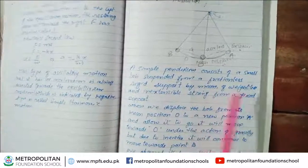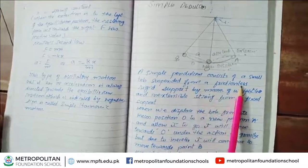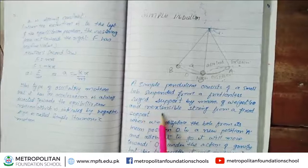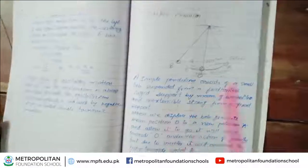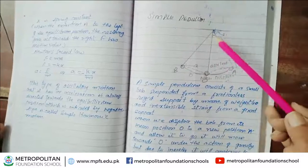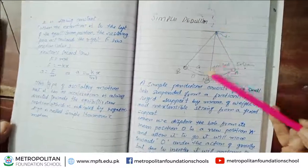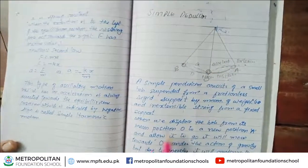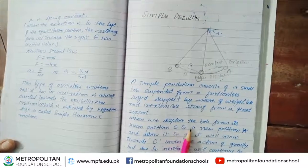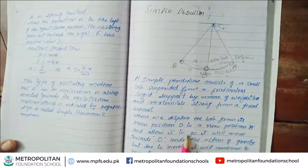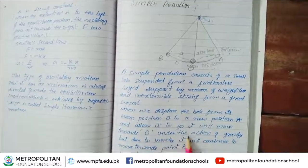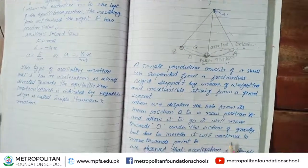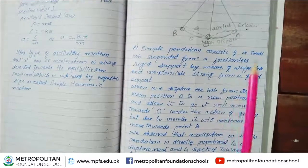A simple pendulum consists of a small bob suspended from a frictionless rigid support by means of a weightless and inextensible string from a fixed support. When we displace the bob from its mean position O to a new position A and allow it to go, it will move towards O under the action of gravity.